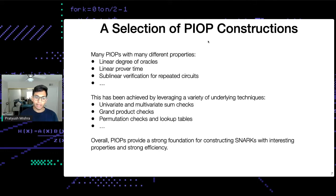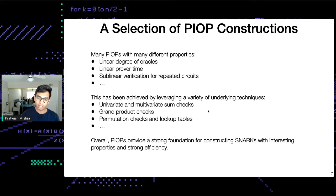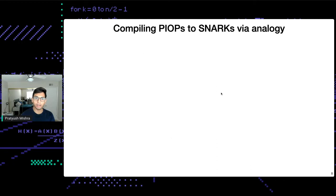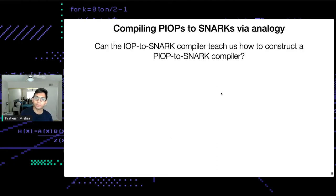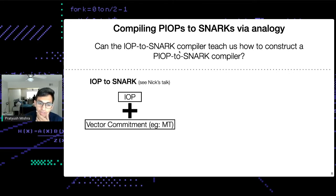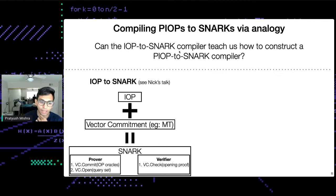PIOPs seem to provide a strong foundation if you can construct a SNARK for them. So how do you actually get a SNARK from a PIOP? Let's take inspiration from the IOP-to-SNARK compiler that Nick just covered. In that compiler, you have an IOP plus a vector commitment like a Merkle tree, and you can get a SNARK.